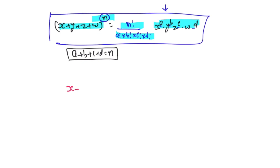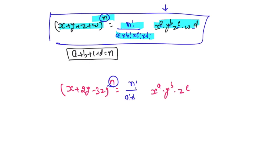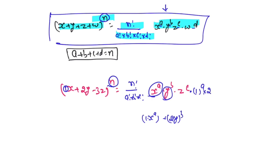Even if you have something like (x + 2y − 3z) raised to power n and you want x^a · y^b · z^c, you do power distribution: n! / (a! · b! · c!). But x comes with coefficient 1, so we write 1^a. For y, we write (2y)^b, so the coefficient 2 must be included as 2^b. For z, it is (−3)^c. So we must do both power distribution and coefficient distribution to find the general term.